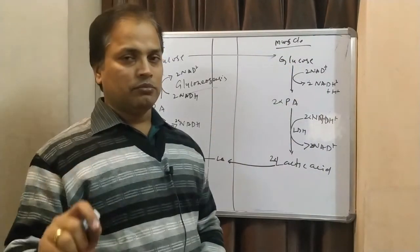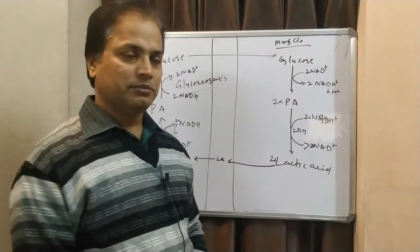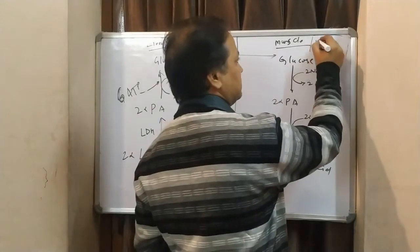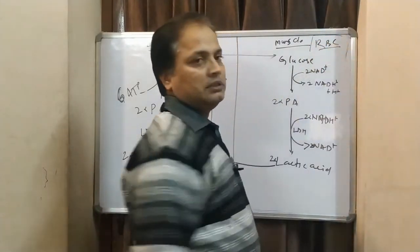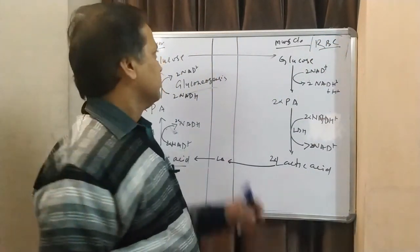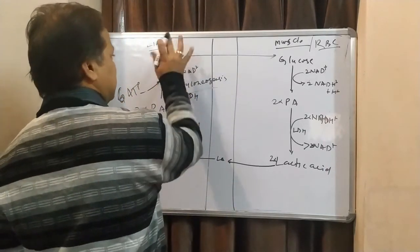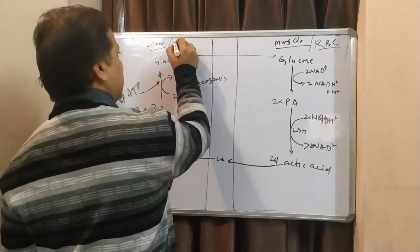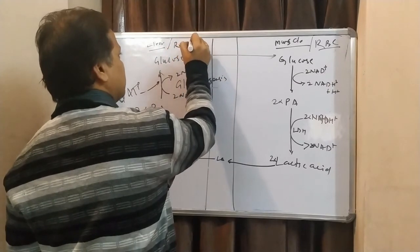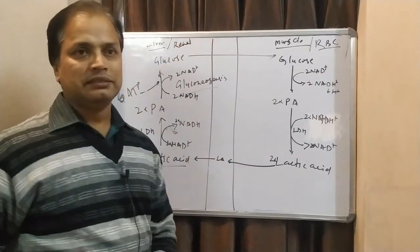This does not occur only in case of muscles. Mainly, it occurs in the muscles. Otherwise, it also occurs in RBCs, erythrocytes. This not only occurs in liver. This reaction also occurs sometimes in renal cortex.